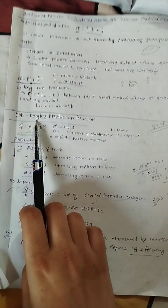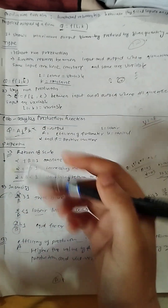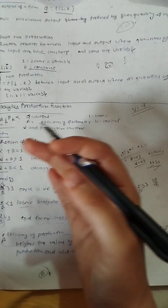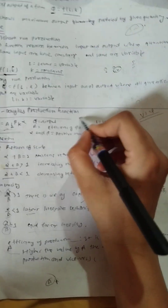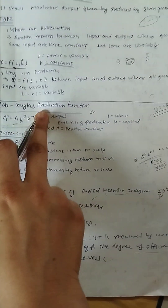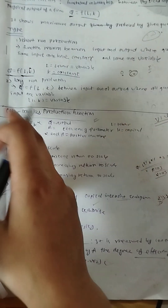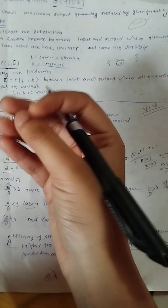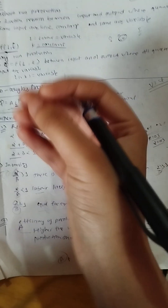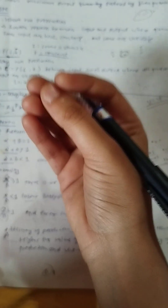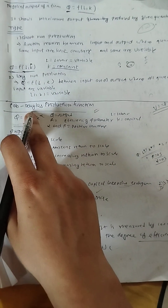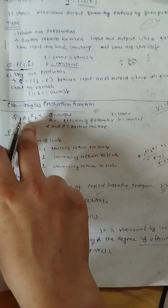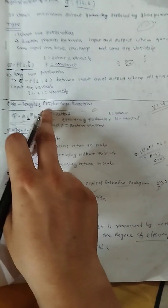Now we have two types of production function used in economic analysis. There is a special method for economic analysis - the Cobb-Douglas production function, which is mostly used in economic analysis. It is given by Q = A · L^β · K^α, where Q is quantity, A is efficiency, and α and β are the output elasticities of capital and labor respectively.